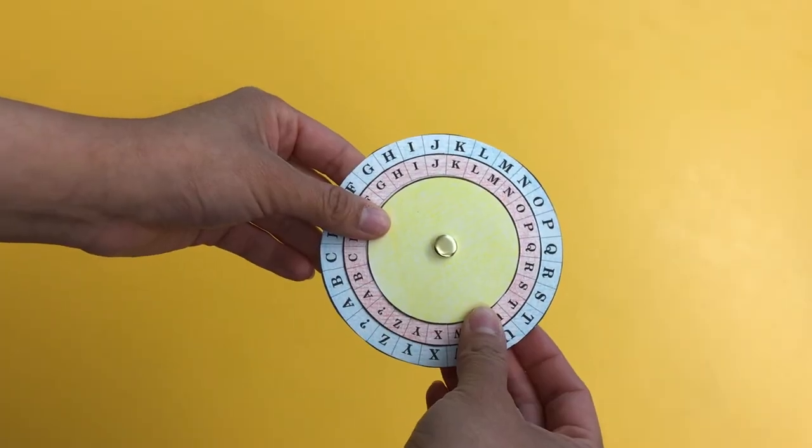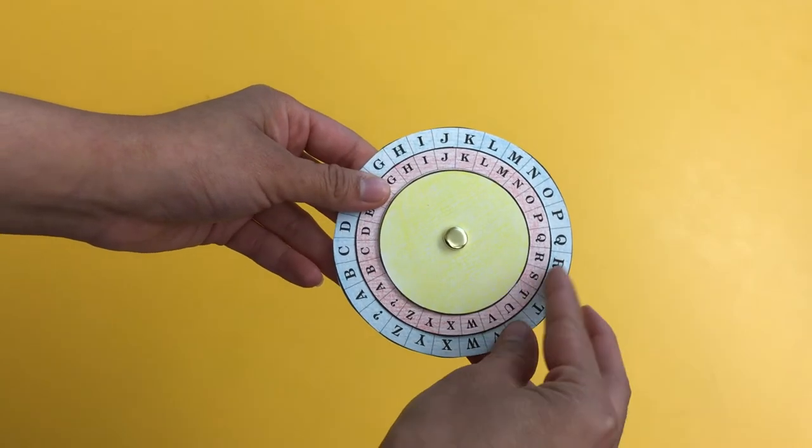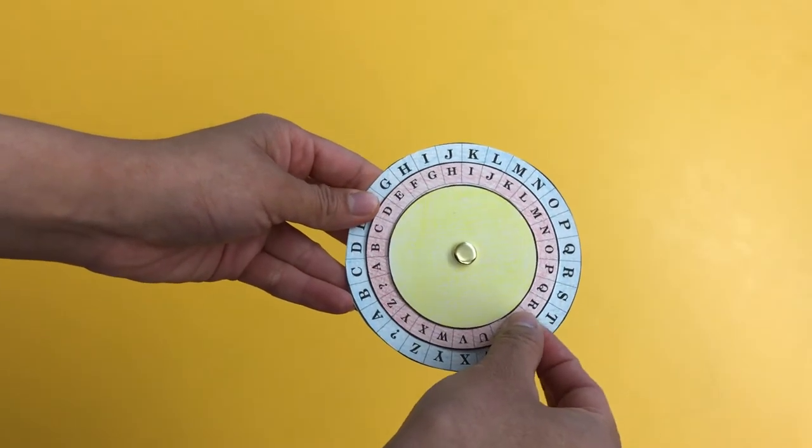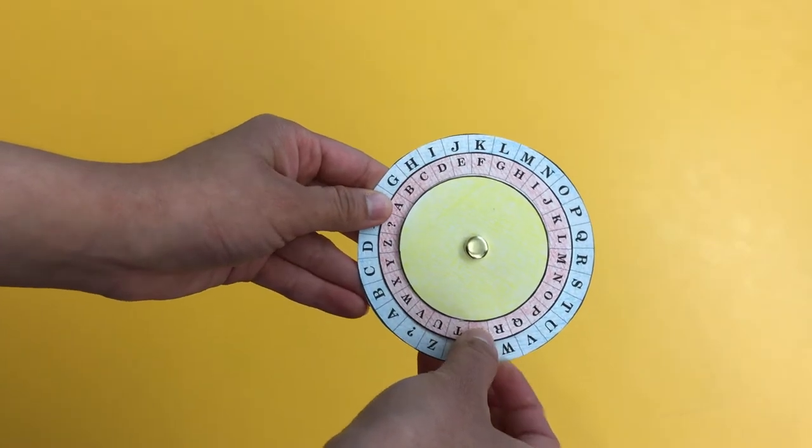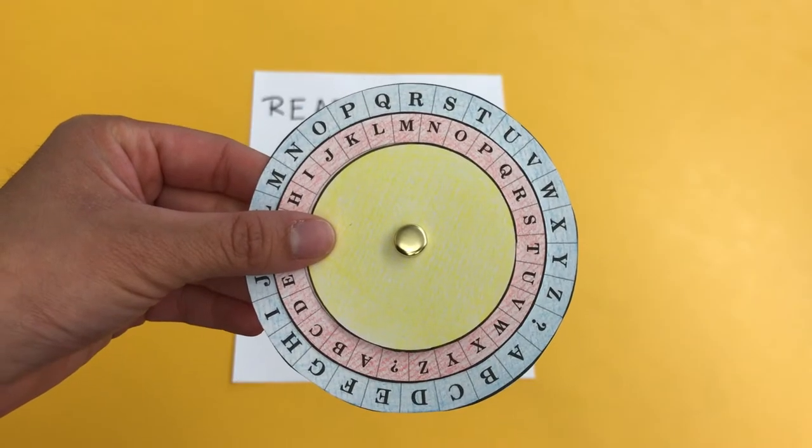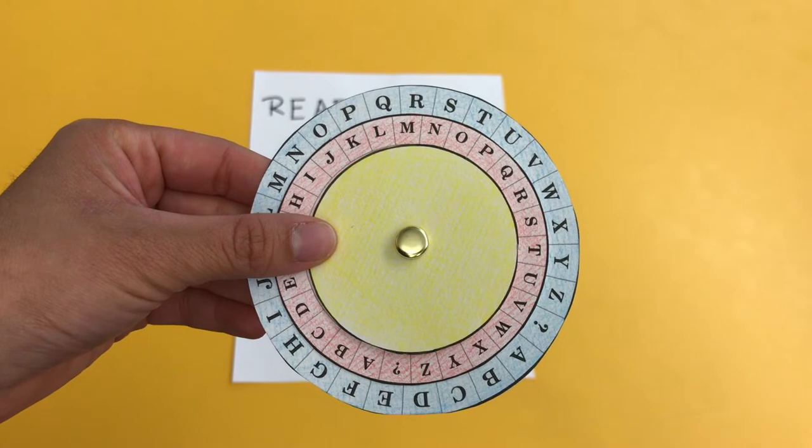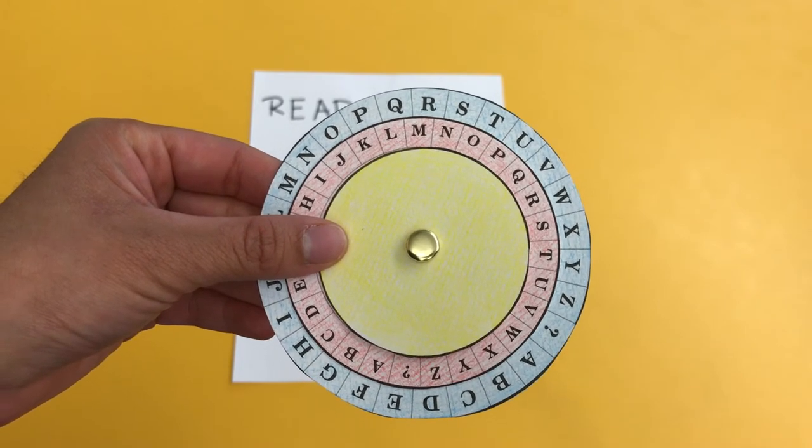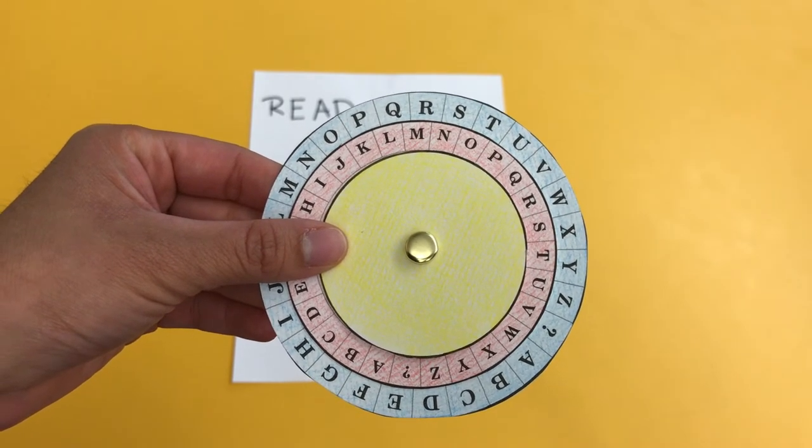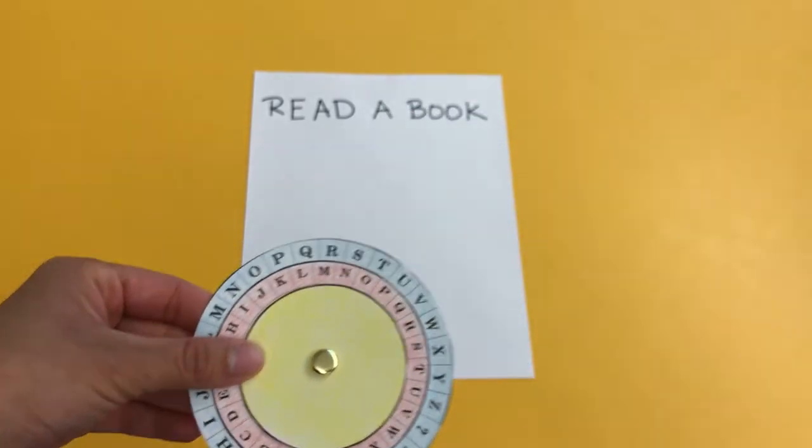To write secret messages, turn the medium wheel any direction until the letters don't match. Now we're going to write our secret message using the decoder wheel. You can write any secret messages you want. For example, our secret message is read a book.